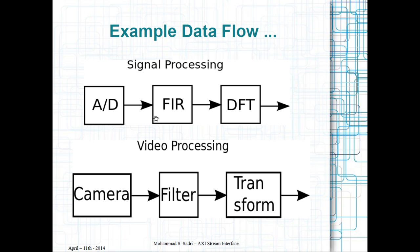In this system the data is flowing through the blocks and you don't really need an address. When transferring data from the FIR block to the DFT block, you just read sample after sample and pass the result to the next module. Similarly, a camera stream enters a filter and then a transform unit, and each step performs its own specific task on the data and passes it to the next module.